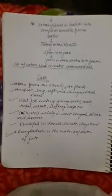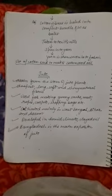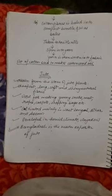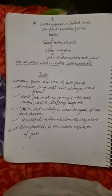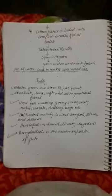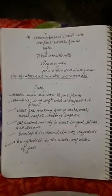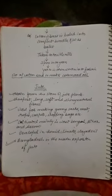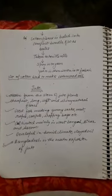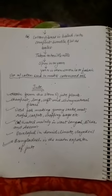Jute fibers are obtained from the stems of jute plants. Jute naturally has a lot of shine. These fibers are used for making gunny sacks, mats, ropes, carpets, and shopping bags.